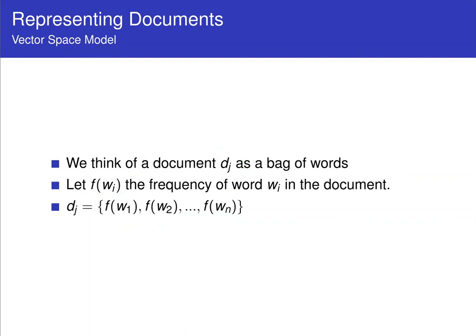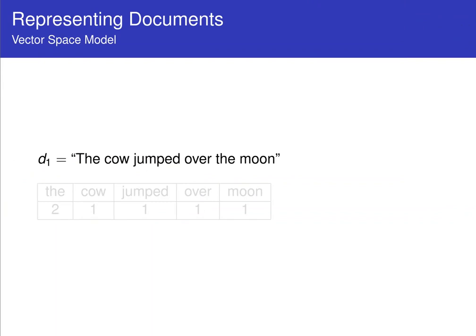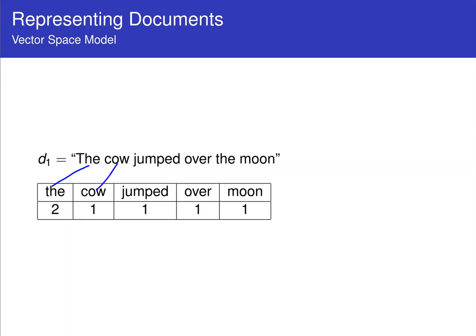So let's look at an example here. For example, the cow jumped over the moon. That's my document. Well, I will look at the bag of words here, and the words that it has is the cow jumped over, and then the goes here, and then moon. As you can see, the word the happens twice, cow jumped over moon, each one of them happens once. So this is how I represent one document.